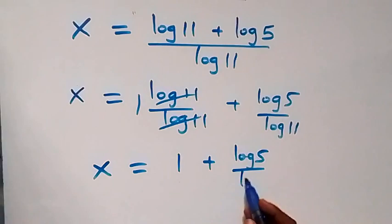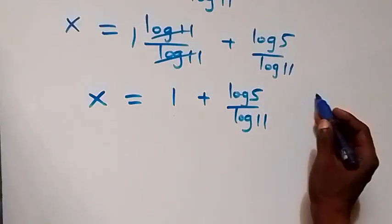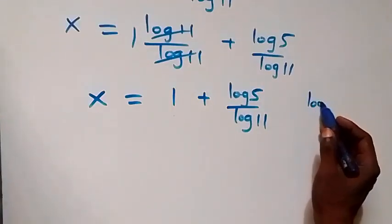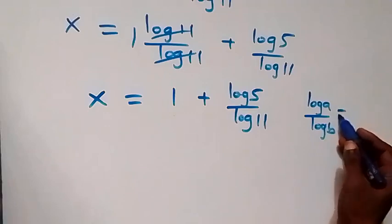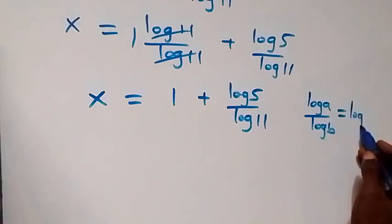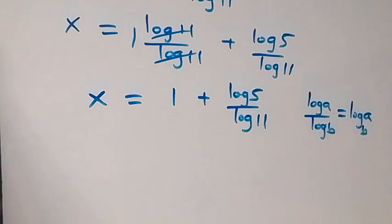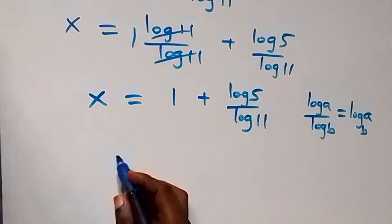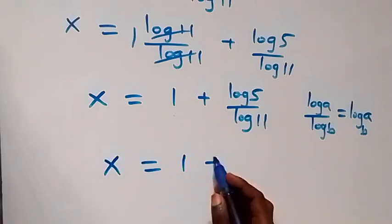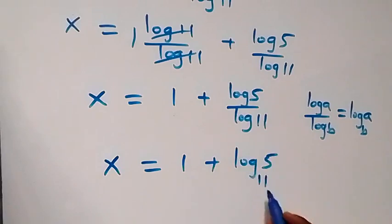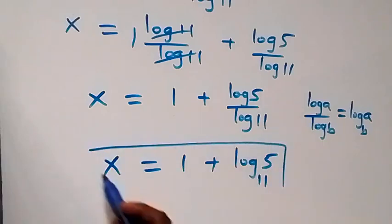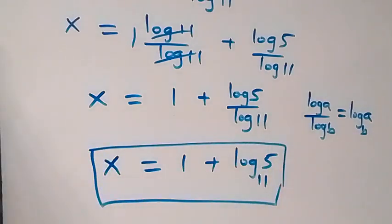Also, when we apply the change of base law — when we have log a over log b, this is the same as log a to base b. Then we have x equals to one plus log 5 to base 11. So the value of x in this given problem is one plus log base 11 of 5.